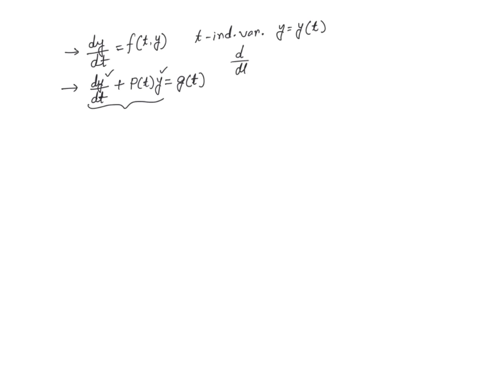Remember, d/dt(uv) = u·(dv/dt) + v·(du/dt). If you look at the left-hand side of our equation, it kind of resembles that product rule form.